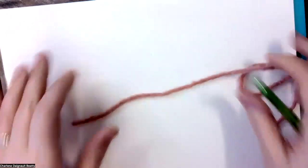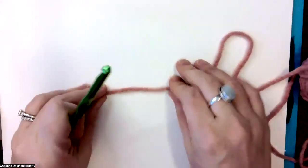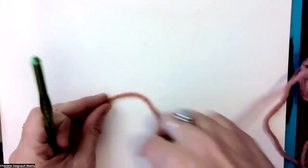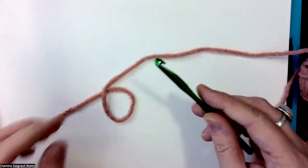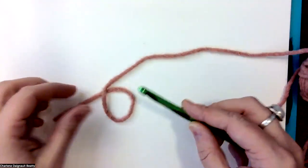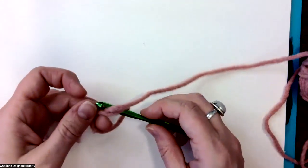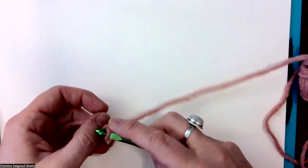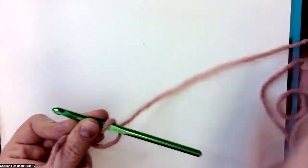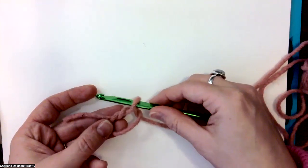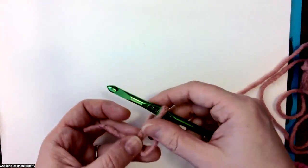Let's try that again from the very beginning, shall we? Okay, so we have our loop. You're going to grab your hook and you're going to go in the loop and you're going to grab the working yarn, which means this yarn is attached to the ball over here, so this is what we're looking for.